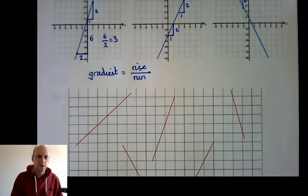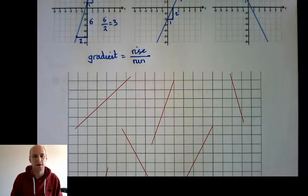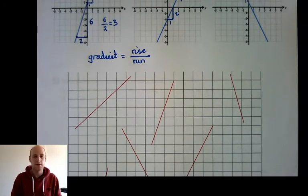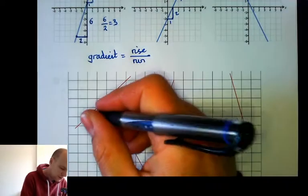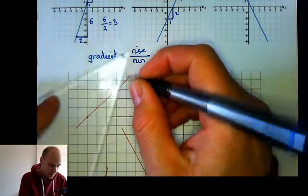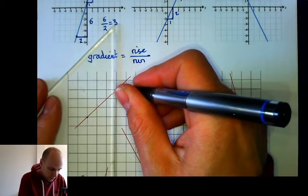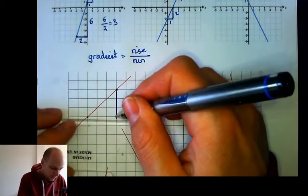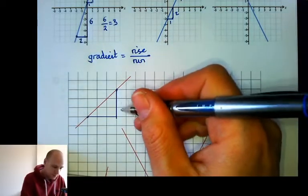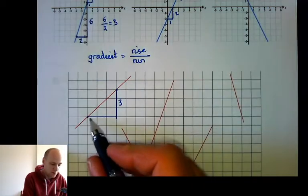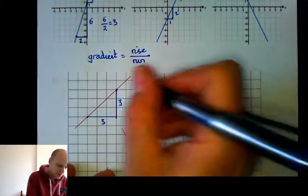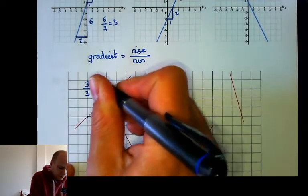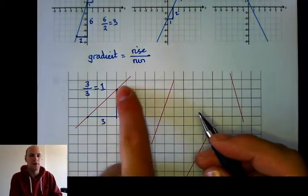Here we've got some examples and I want to find out the gradient of each of these lines. We don't have the equation, so we can't read off the gradient like we could earlier — we've got to work it out from the line. Choose a couple of points that it clearly goes through, then draw your right angle triangle and count the rise — three — and the run — three. Rise divided by run: three divided by three. So we've got a gradient of one.